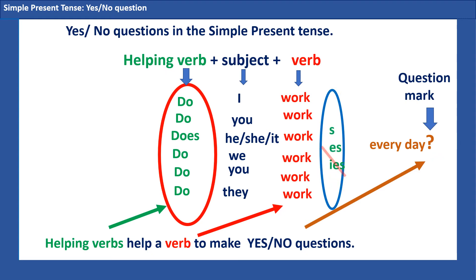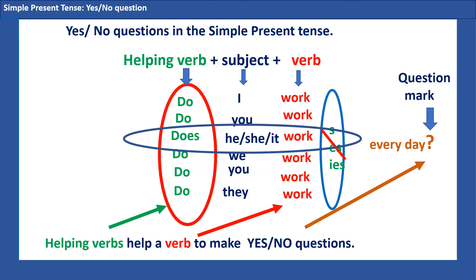Don't write 's,' 'es,' or 'ies' after the verb — it's just a simple verb. And when do we use 'does'? We only use 'does' when the subject is he, she, or it.